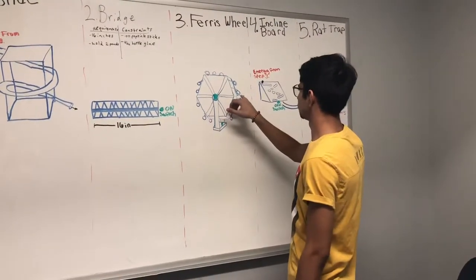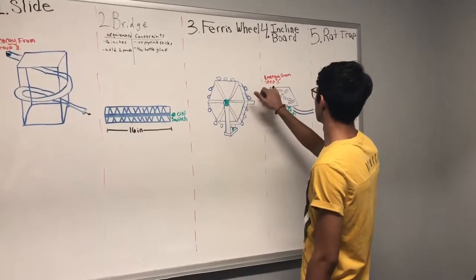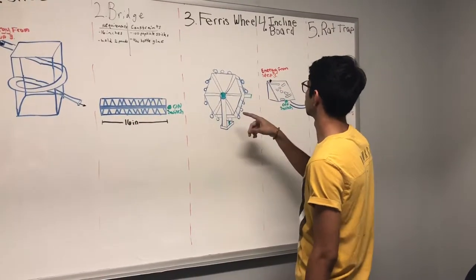On the wheel, we also have a tab here, which, when turned, will hit this ball in Step 4, which will transfer energy from Step 3 to Step 4.